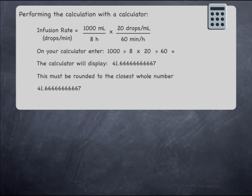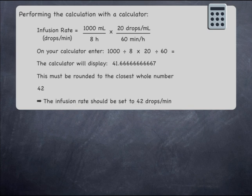To do this, look at the first digit after the decimal point, which in this case is a 6, and ignore all other digits after this. This digit is larger than 5, and so the previous digit, the 1, turns into a 2, and the remainder of the digits after this are dropped. The infusion rate should be set to 42 drops per minute.